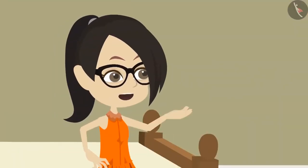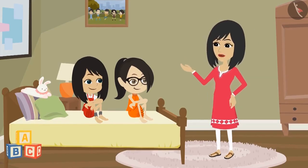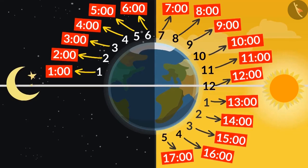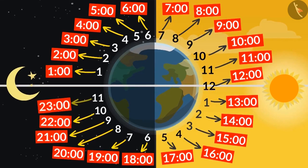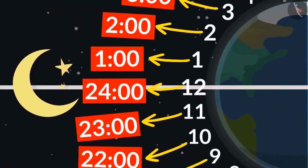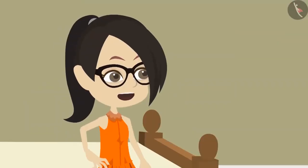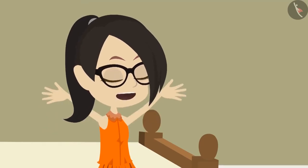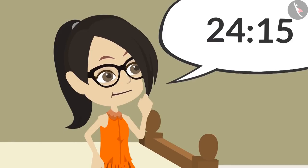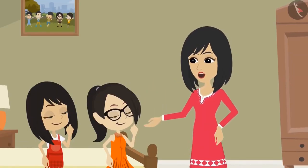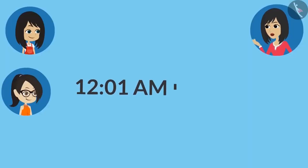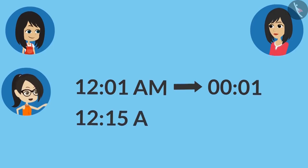Then how will we write 12 o'clock at night? Why don't you try it yourself? If 5 o'clock in the evening is 17, then 6 will be 18, 7 will be 19, 20, 21, 22, 23, 24. That is, 12 o'clock at night will be written as 24:00. You found it correctly, Neha. If it is 15 minutes past 12 o'clock at night, then how will we write it? 24:15? No. After 12 o'clock at night, time starts from 0. So if you want to write 1 minute past 12 o'clock, 00:01 will be written. That means 15 minutes past 12 o'clock at night will be written as 00:15 in the 24 hour format.